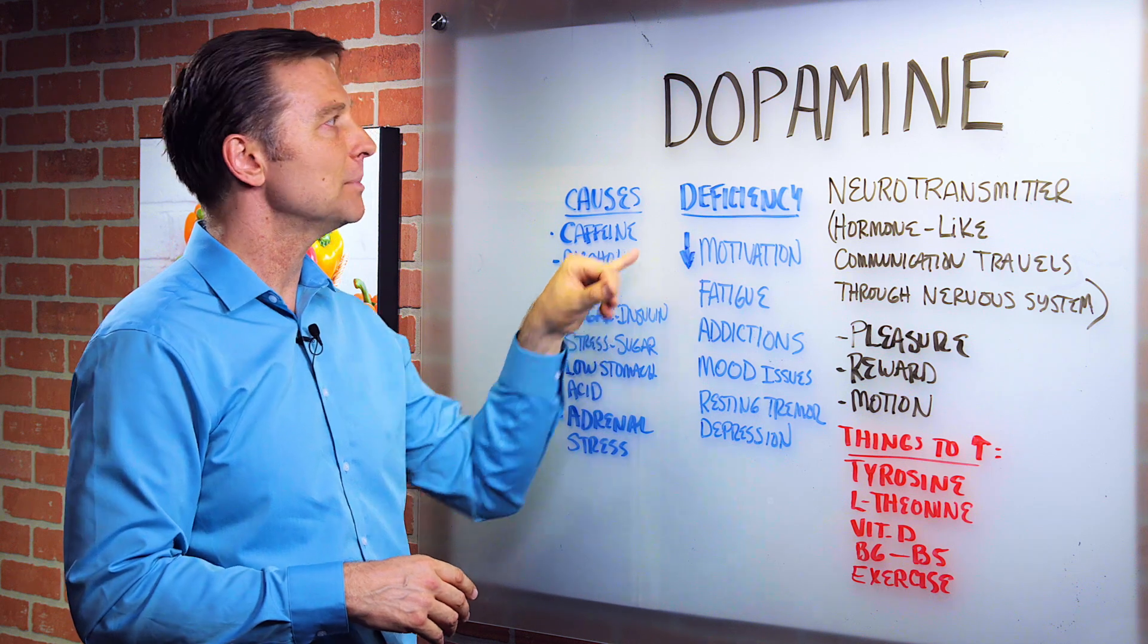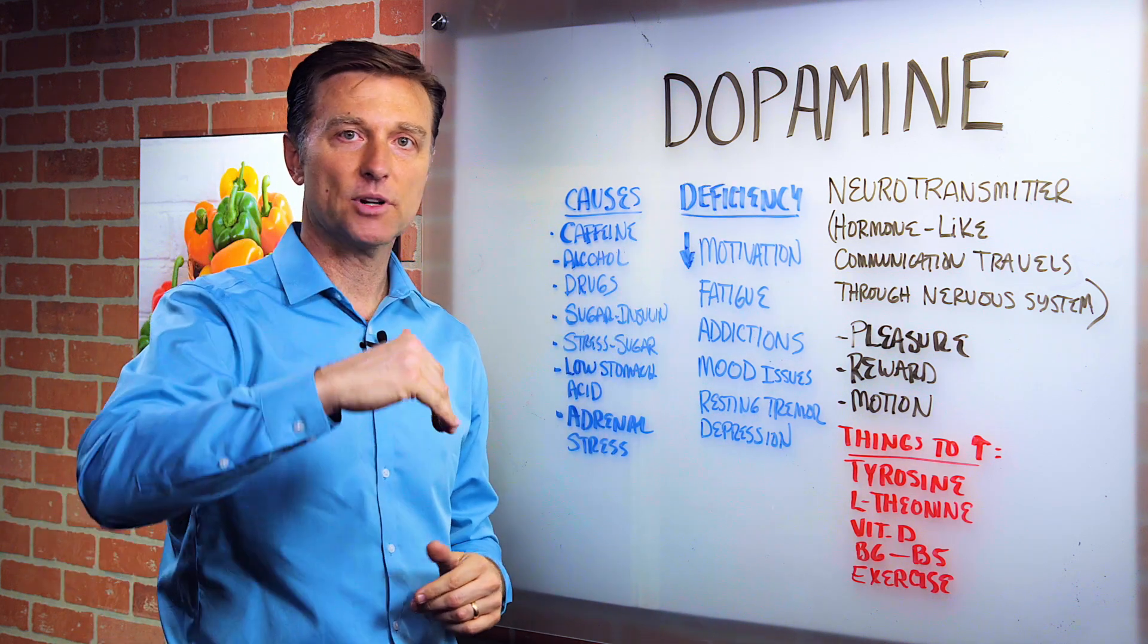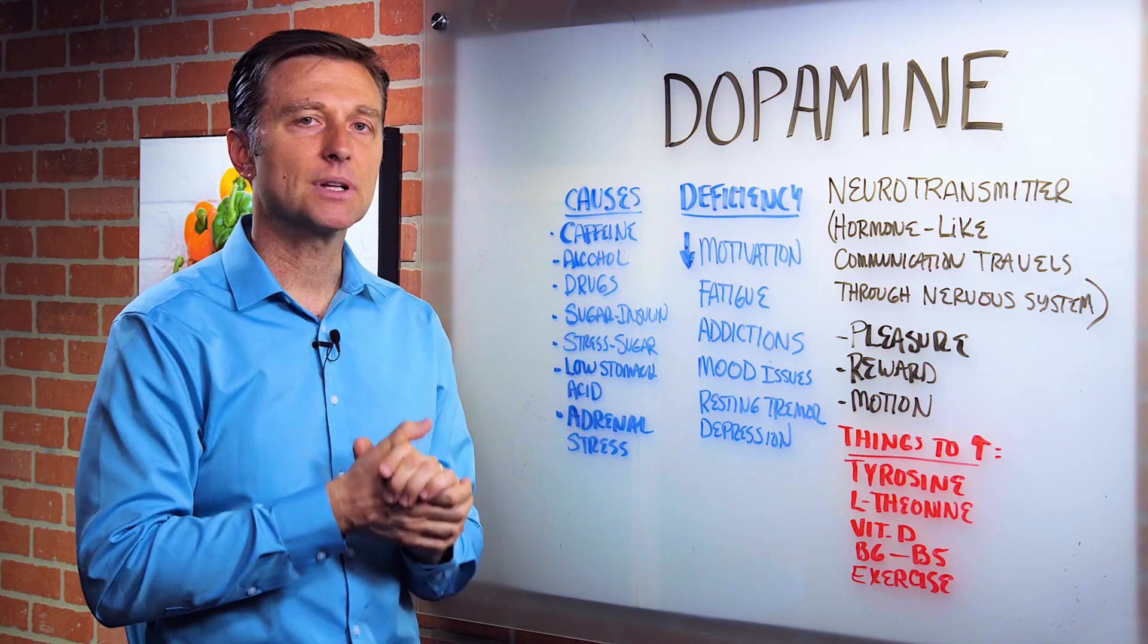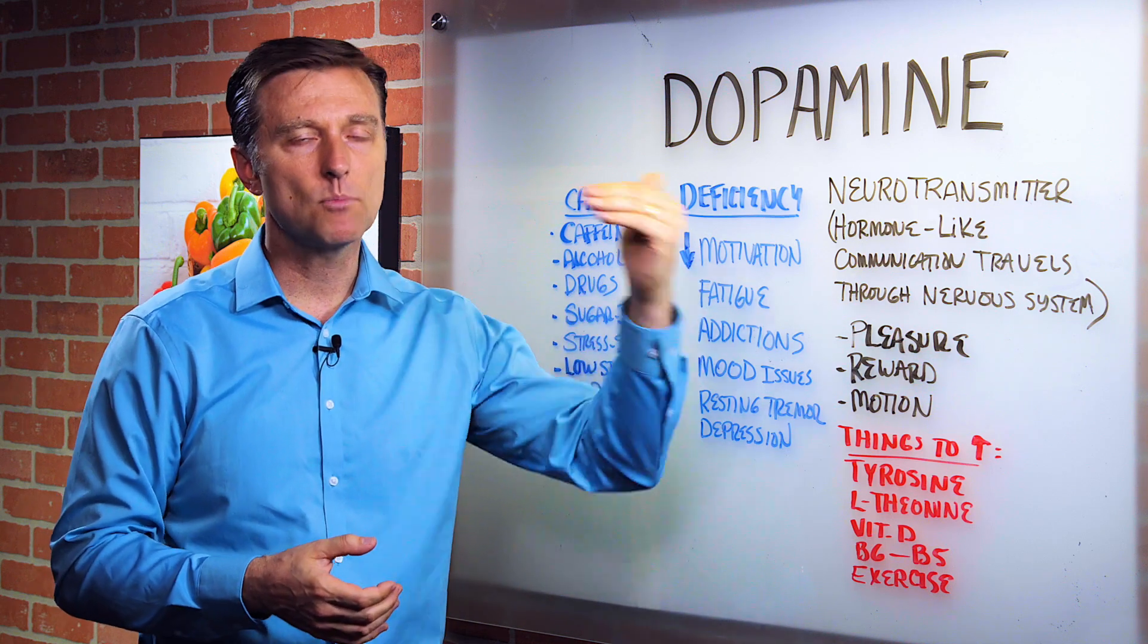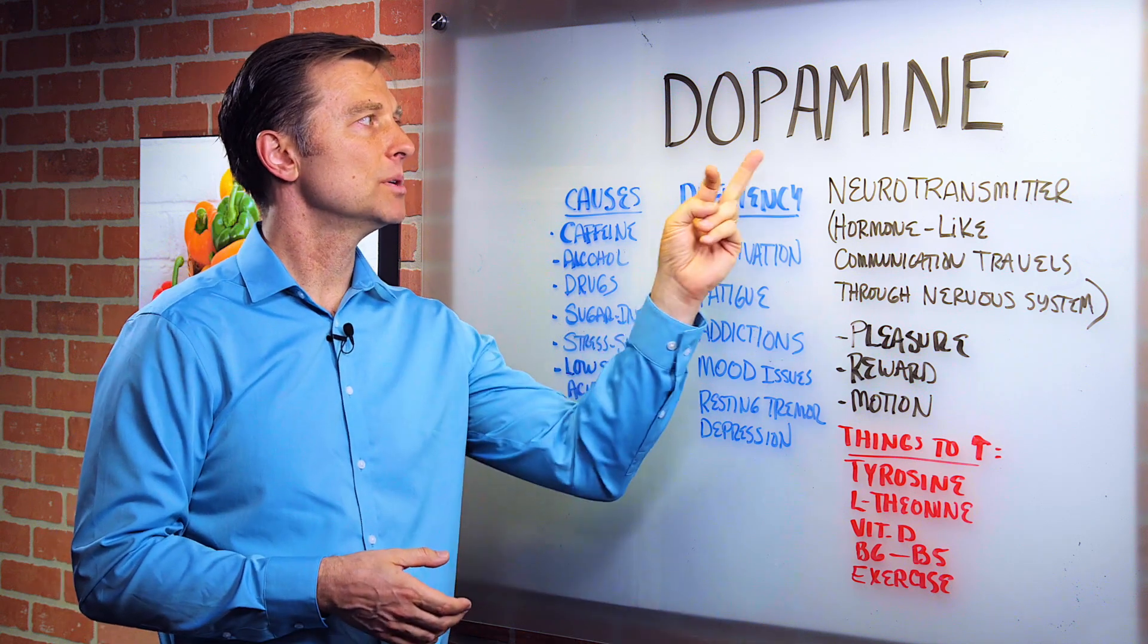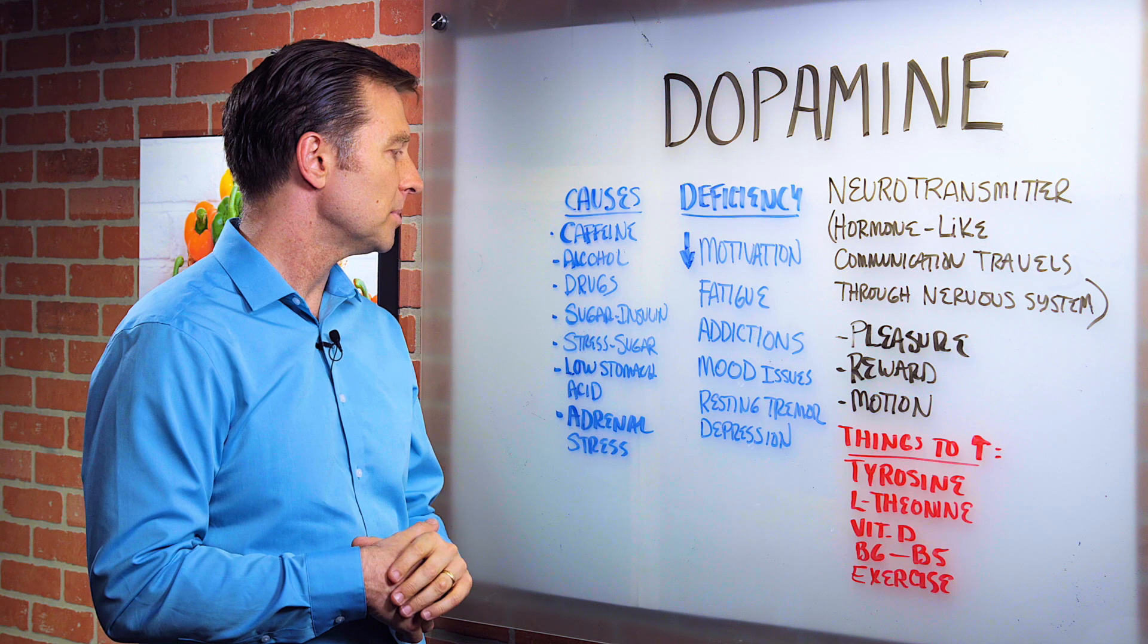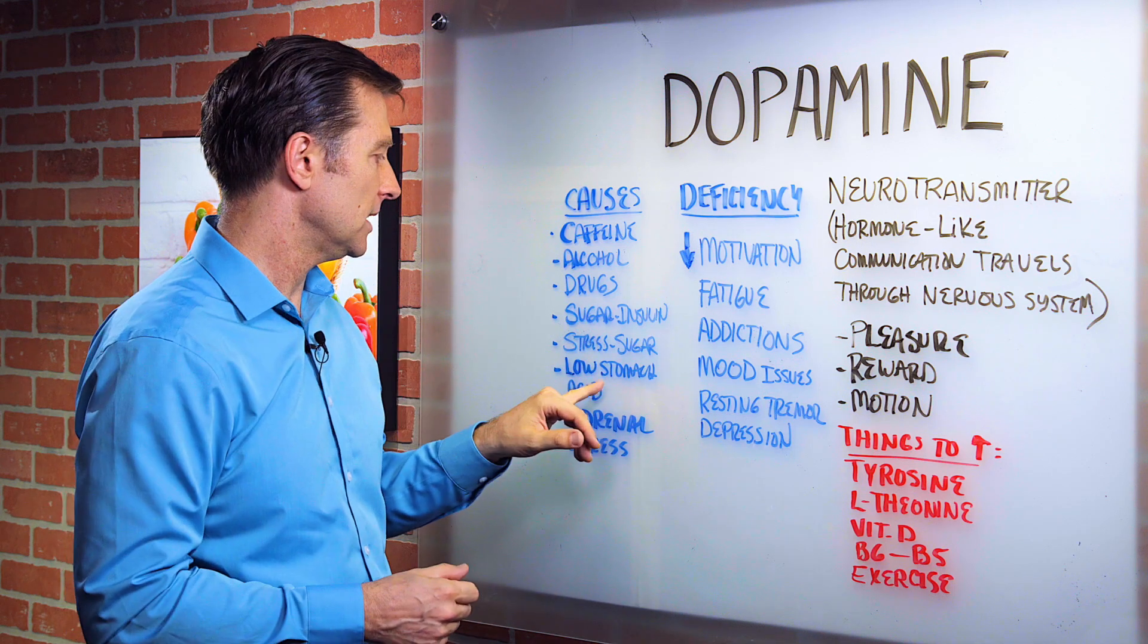So over time, it depletes dopamine. So it's a trick. You bring it up and it's bringing it down. Same thing with drugs. If you're going to deplete your dopamine reserves, you're going to cause the necessity to take more and more drug over time. Insulin, sugar will deplete dopamine. Stress will deplete dopamine. Cortisol from the adrenals will deplete dopamine.